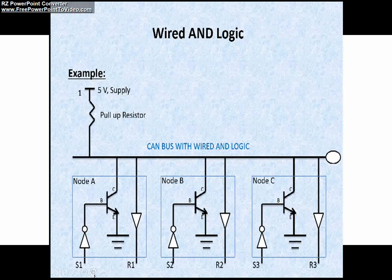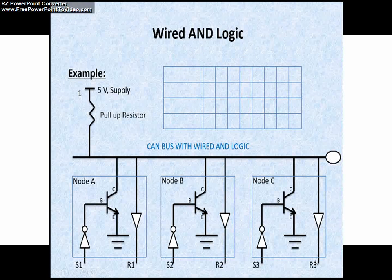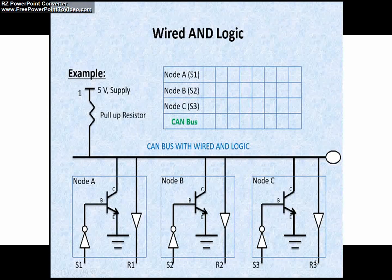In node A, the TX pin is designated as S1 and the RX pin is designated as R1. Similarly, in node B, the TX pin is designated as S2 and the RX pin is designated as R2. And in node C, the TX pin is designated as S3 and the RX pin is designated as R3. Friends, we already discussed AND logic. This circuit is going to work according to AND logic.